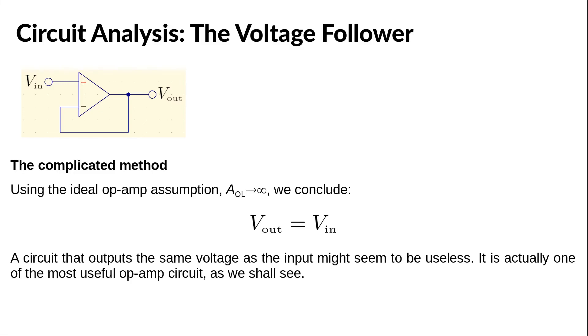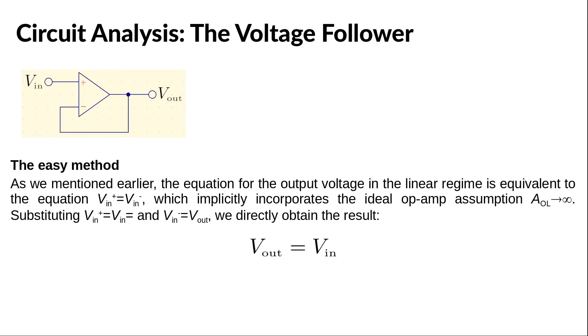But let us now see how we can arrive to the same result with the easy method. Remember, we mentioned earlier that the equation for the output voltage in the linear regime is equivalent to saying that the voltages at the inverting and the non-inverting inputs are equal. This statement already includes the ideal op-amp assumption for which A_OL is infinite.